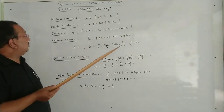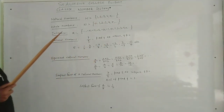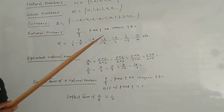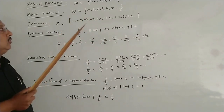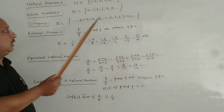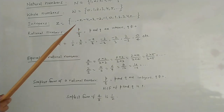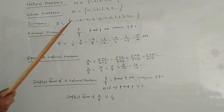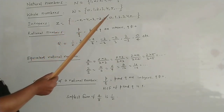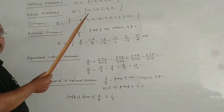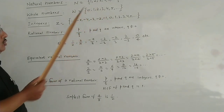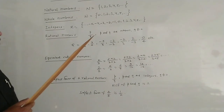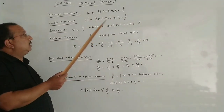Then come whole numbers. All the natural numbers together with 0 form the set of whole numbers. The set of whole numbers is denoted by the letter W. In the set of whole numbers, the least whole number is 0 and there is no biggest whole number.